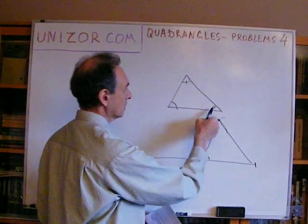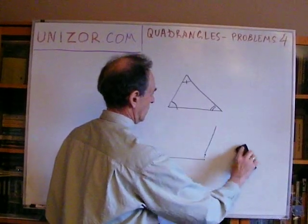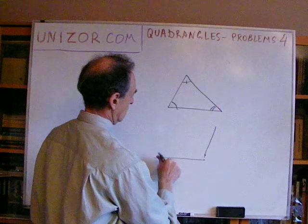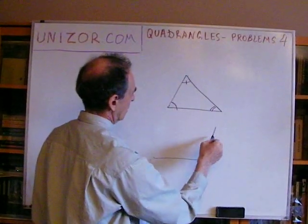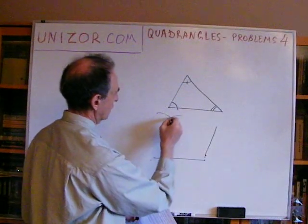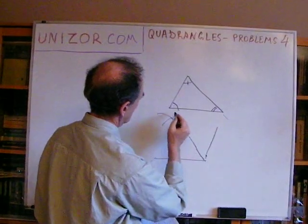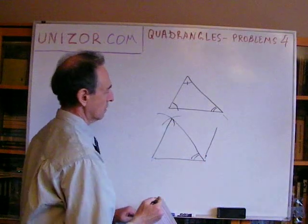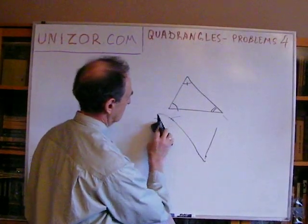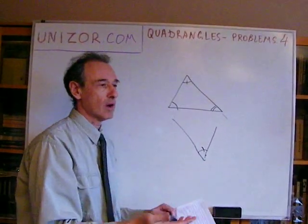Now we have to subtract the second angle from what remains. We do it very similarly: take this radius, put it here, take another radius, and make a triangle. This is equal to this, and this is equal to this, and this is equal to this — so you've got this angle. From the remainder after the first subtraction, you subtract the second angle, and whatever is left is the third angle. So basically this angle is congruent to what we need — it's an exercise in subtraction of angles. That's easy.